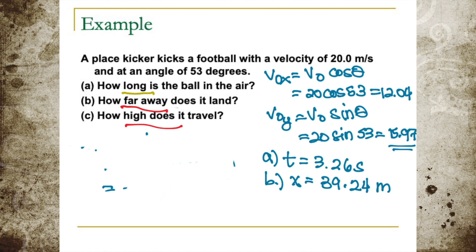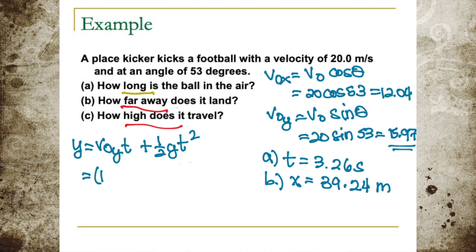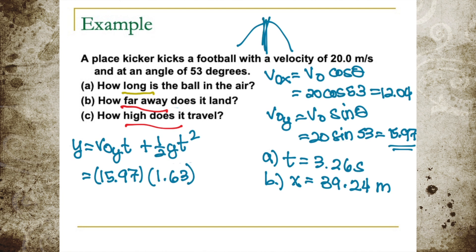The last question: how high does it travel? Since it's asking for maximum height, we use the vertical component formula Y equals V0y t plus one-half g t squared. V0y is 15.97 times 1.63 — we use 1.63 seconds because maximum height occurs at halfway through the total flight time — minus 4.9 times 1.63 squared. This gives us a maximum height of 13.01 meters.